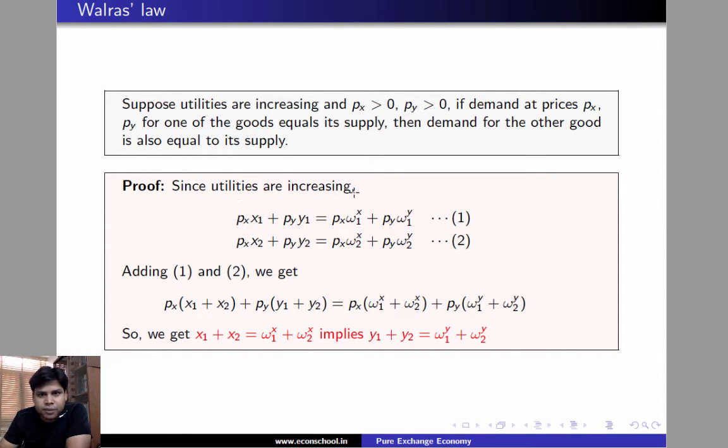The proof is simple. Since utilities are increasing, consumers will spend all their income in optimum. Therefore, equations 1 and 2 hold. Adding 1 and 2, we get the following expression.